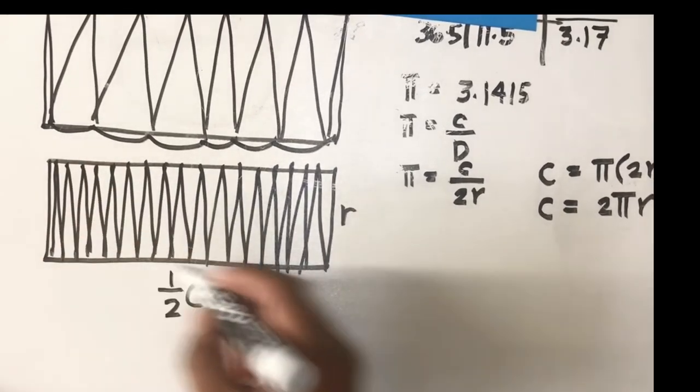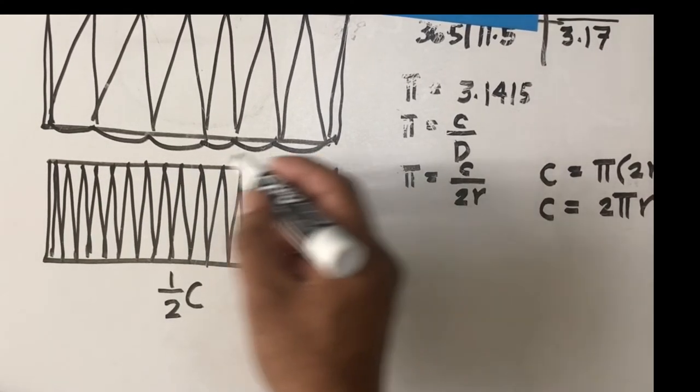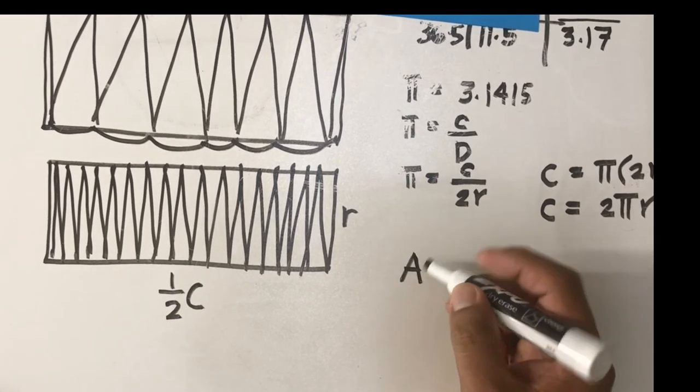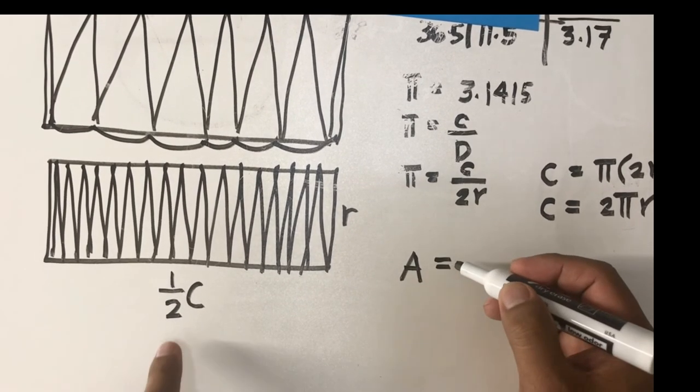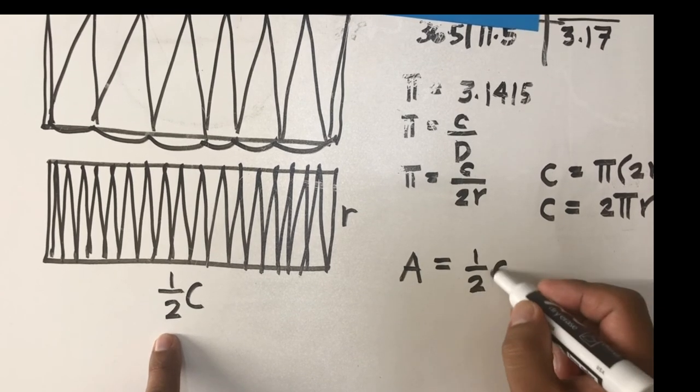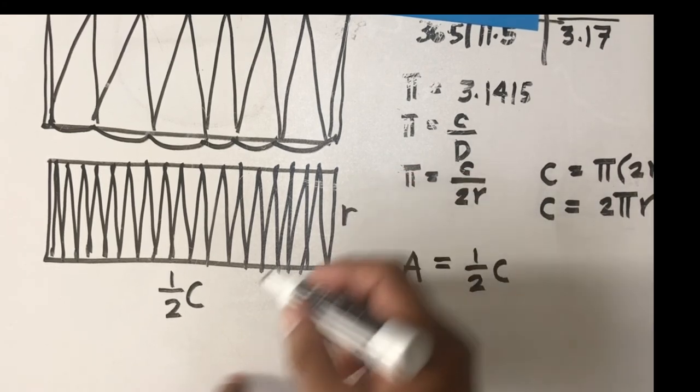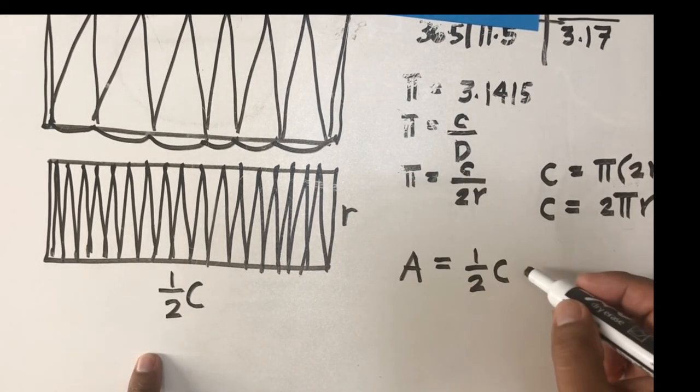So for the area of this rectangle, we now get A equals the length which is one half C, times the width which is r.